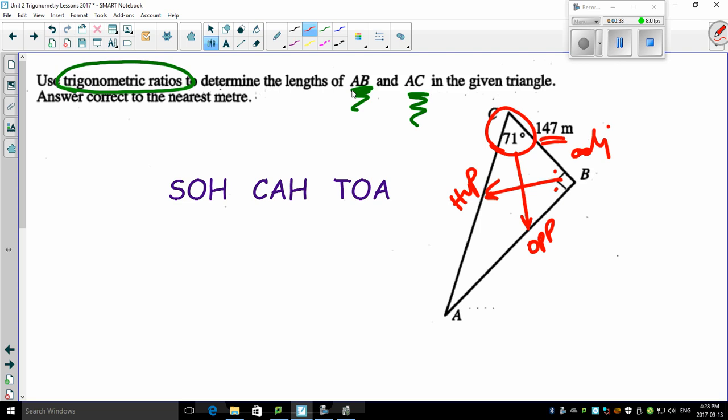So what you want to do is figure out both AB and AC. Well, pick one. Don't try to do too many things at one time. One at a time. I'm going to pick AB first. So what I want to do is determine that length right there. Easy peasy.